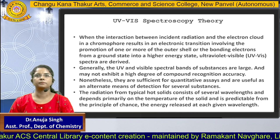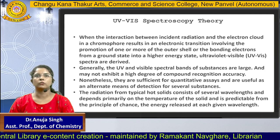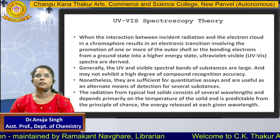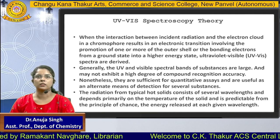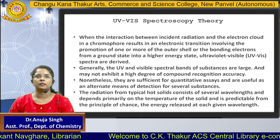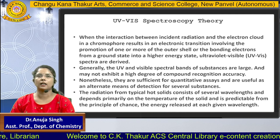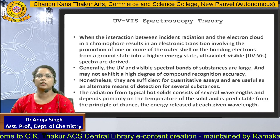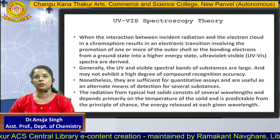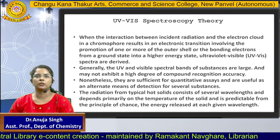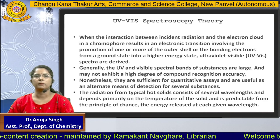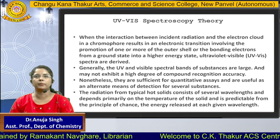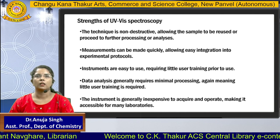The incident light interacts with the electron cloud and gives us electronic transitions. UV Visible bands are generally broad — we get a Gaussian curve. With increasing polarity, the band shifts to a red shift, meaning the wavelength increases. It also depends on temperature.